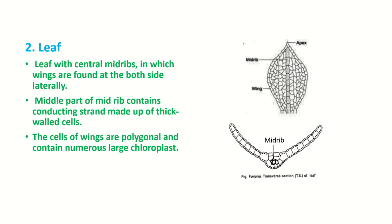Regarding the internal structure of the leaf — the leaf is a flat structure with a midrib in the center and wings on the sides. The middle part consists of a large number of cells, whereas the wing cells are polygonal and contain a large amount of chloroplasts.